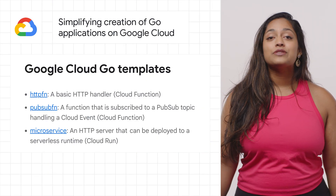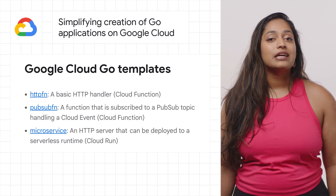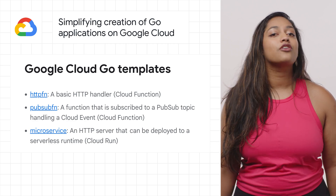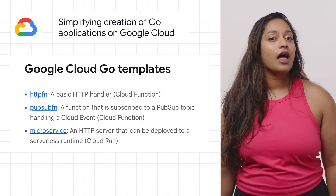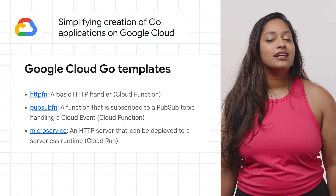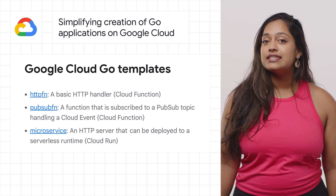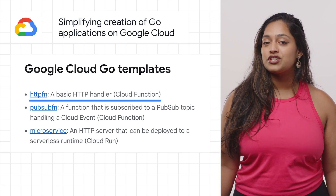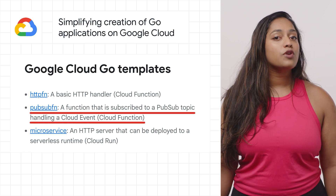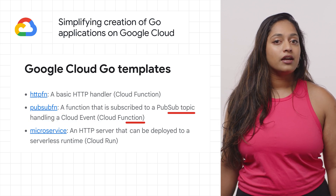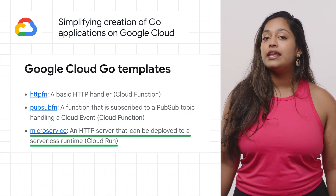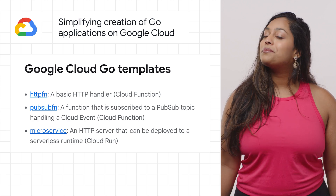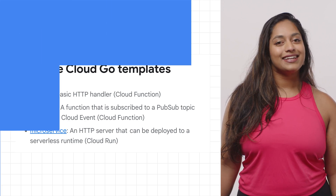Google Cloud is releasing four templates for Go New that developers can use to bootstrap their Go applications across several Google Cloud products. This includes common use cases such as creating a simple HTTP handler cloud function, subscribing to a Cloud PubSub topic, or creating an HTTP server on Cloud Run. Learn more about these templates at the link.